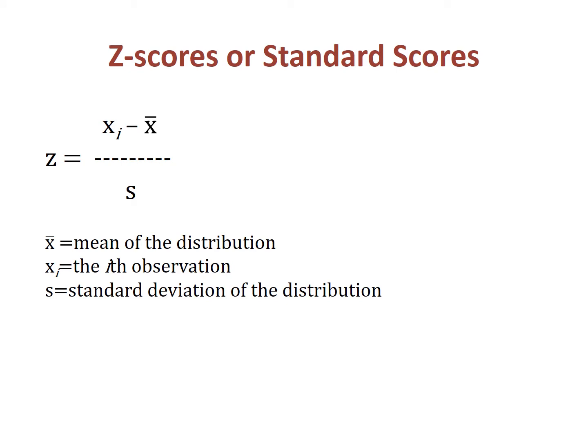Any distribution of points can be expressed in units of the standard normal distribution by converting its values to what is called a z-score, or standardized score. The z-score standardizes any normal curve into the standard normal curve. The calculation is simple: subtract the mean from any point and divide by the standard deviation. If the point is less than the mean, the z-score will have a negative coefficient; if the point is more than the mean, the z-score will have a positive coefficient.